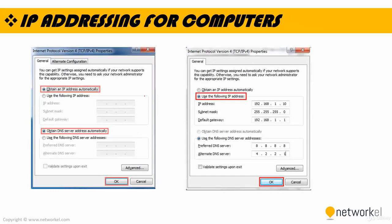So let's take a look at how I can set an IP address for computers. I have two options to obtain an IP address for my computer. The first option is to obtain an IP address and DNS address automatically from a device using the DHCP protocol. The second option is to manually set the IP address — I choose 'Use the following IP address' and set my IP address, subnet mask, and default gateway manually.